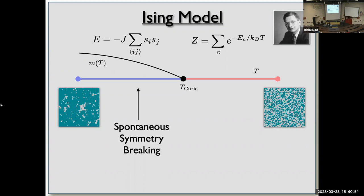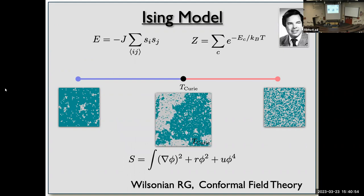There's even more the Ising model gave us. In the 1960s–70s there was extensive work understanding the Ising phase transition. Ken Wilson, in a remarkable piece of work — arguably the most profound theoretical physics of the last 50 years — developed the renormalization group. He realized that at the critical point, spin configurations have strange fractal forms, and the distribution of these shapes is described by conformal field theories.